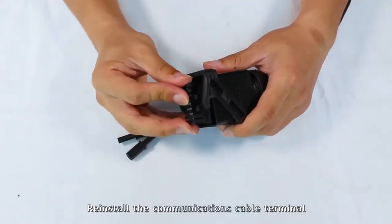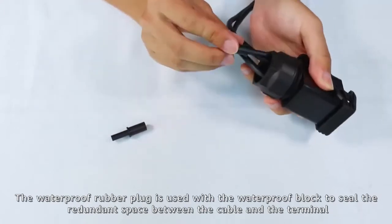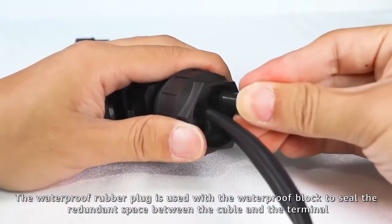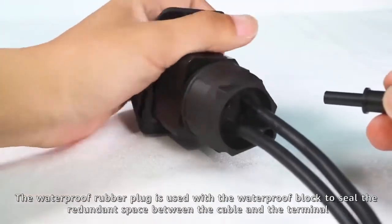Install the communications cable terminal. The waterproof rubber plug is used with the waterproof block to seal the redundant space between the cable and the terminal.